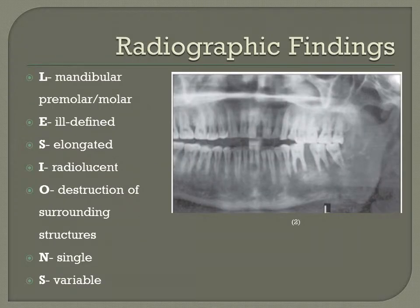Radiographic findings. Although fibrosarcomas can be found throughout the entire body, the description provided will be specific to the oral cavity. Location: most commonly in the mandibular premolar-molar region, but can occur in any bone or soft tissue. Edge: ragged, ill-defined borders that are non-corticated. Shape: typically elongated following the marrow cavity of the bone, but can present in many variable shapes.